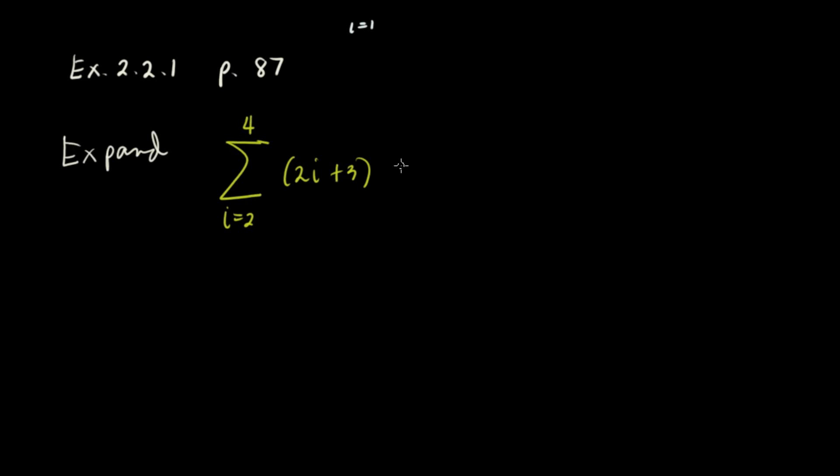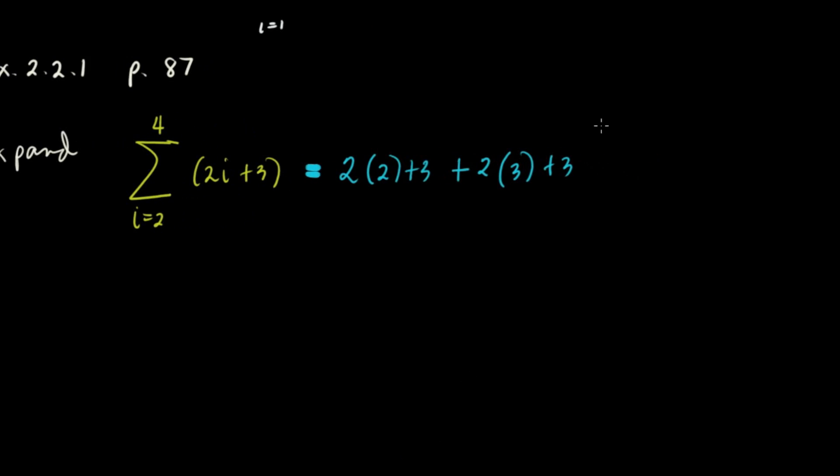The rule is 2i plus 3. So we'll start with i equals 2. That's 2 times 2 plus 3, plus, then we progress by adding one. So the next is 3. That's 2 times 3 plus 3. And then we'll have plus 2 times 4 plus 3. You know to stop when you reach the upper bound.